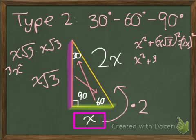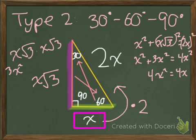So this is plus 3X squared equals 2X times 2X, which is 4X squared. Is that true? Well, yeah, we have 4X squared on this side equals 4X squared on this side, which means it must be a right triangle.